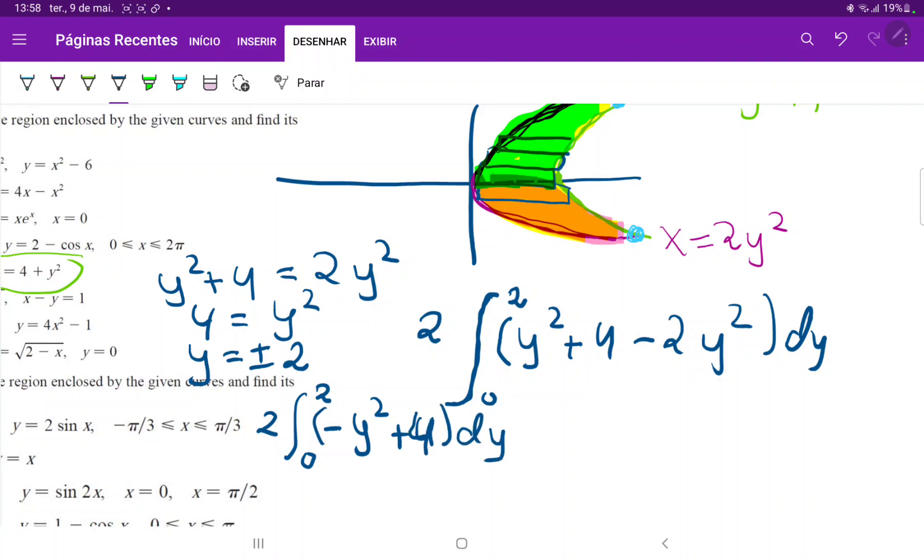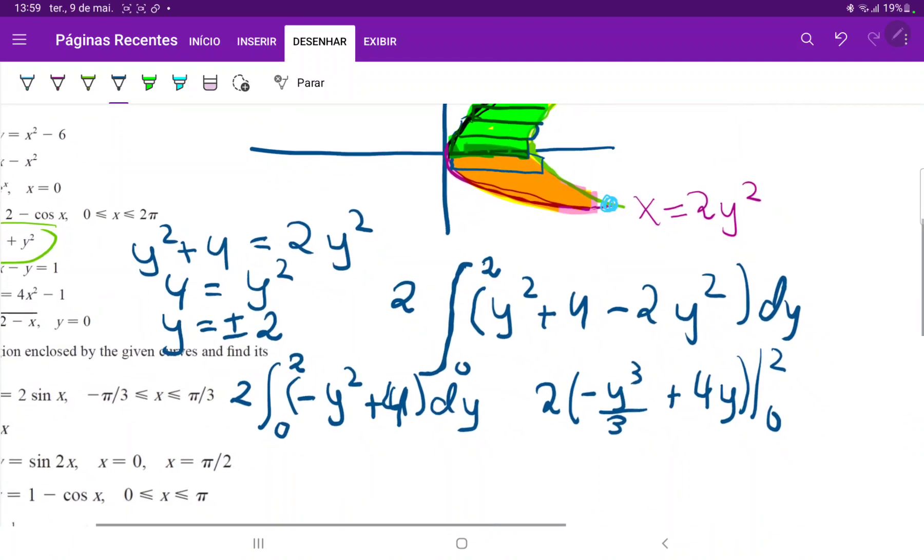So now we just apply our regular reverse power rule. So this is two times minus y cubed over three plus four y evaluated from zero to two.